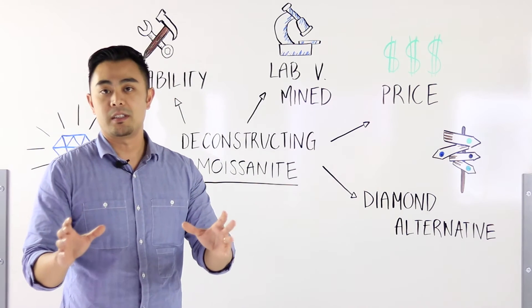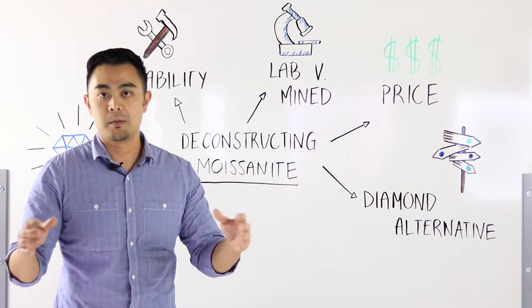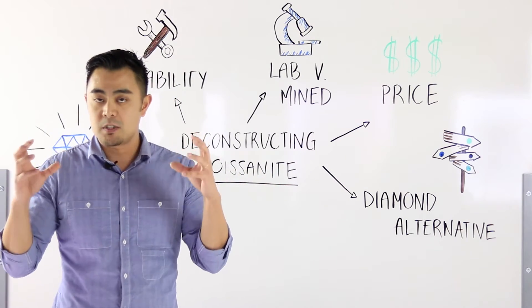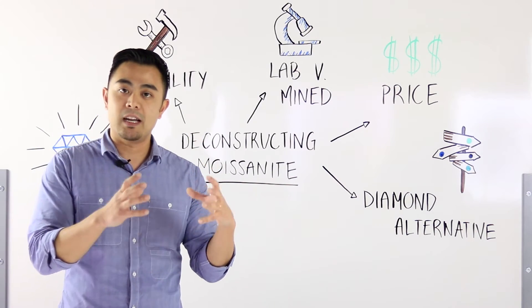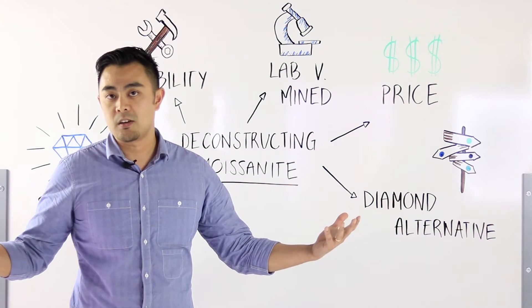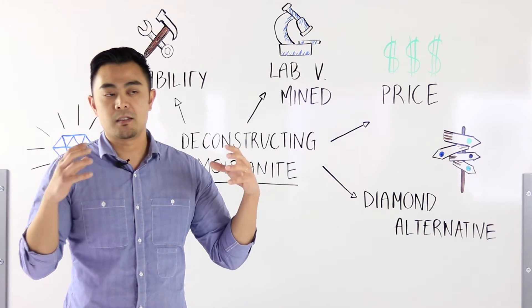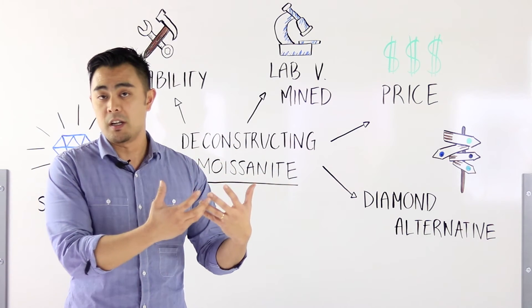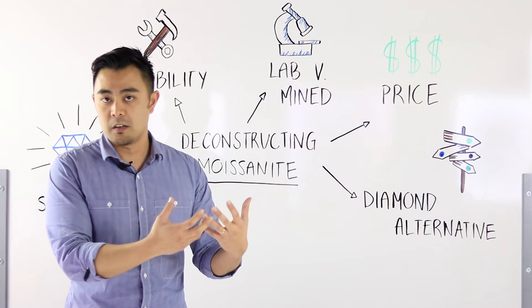When you're comparing a moissanite and a diamond, they are completely different. They're not the same in terms of the chemical compound. But moissanite actually occurs naturally in nature. The only difference is that it does not occur in a sense where the stone is large enough to make it into a gem, therefore it has to be created in a lab.